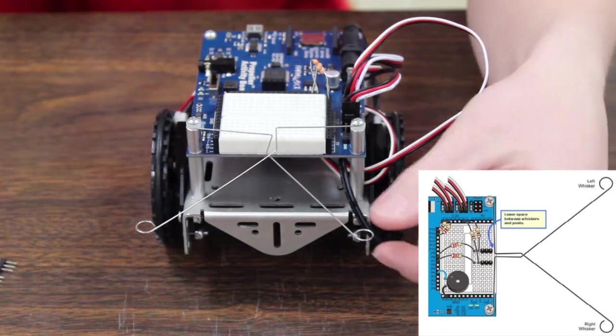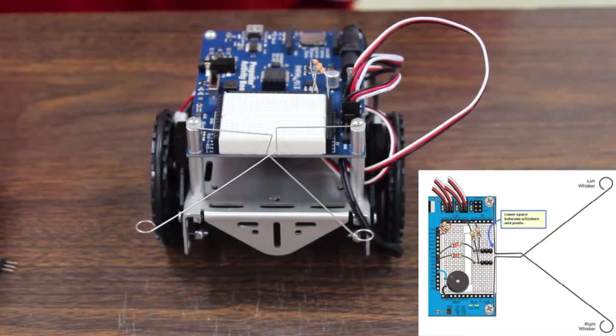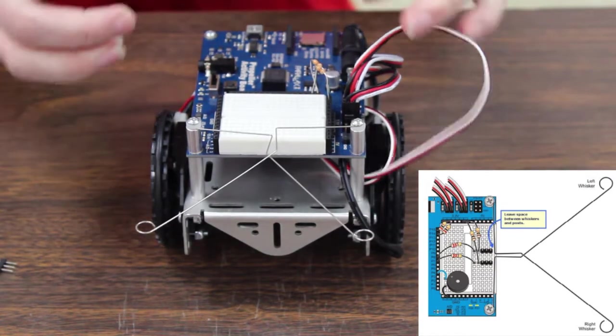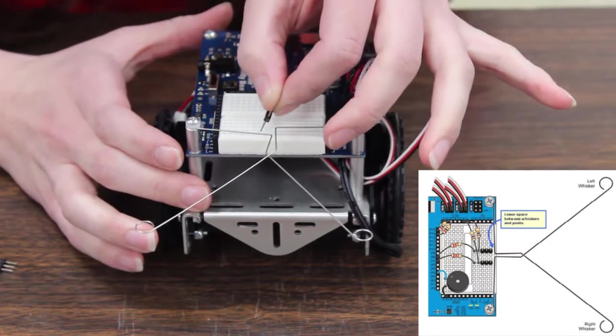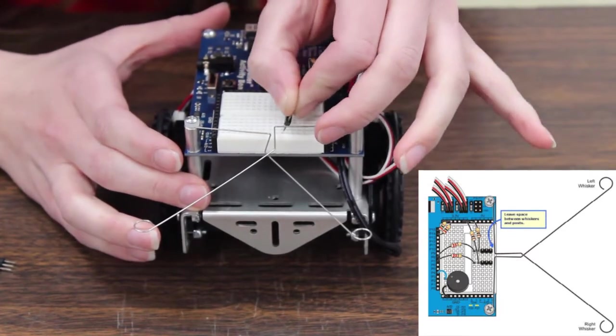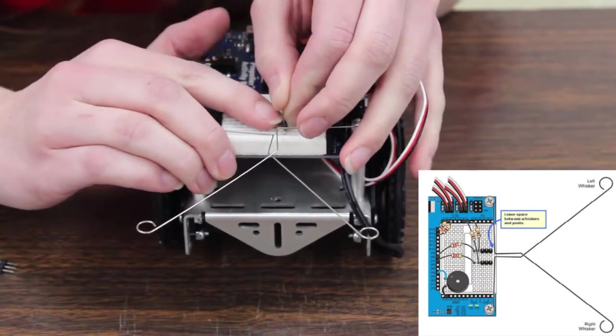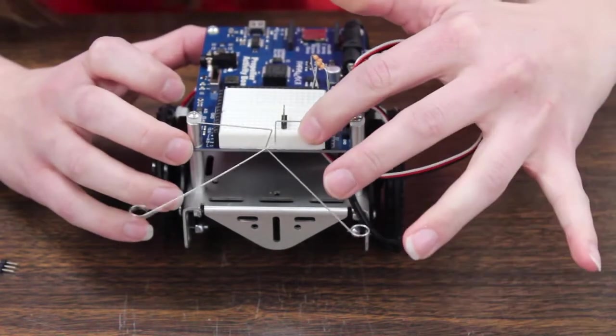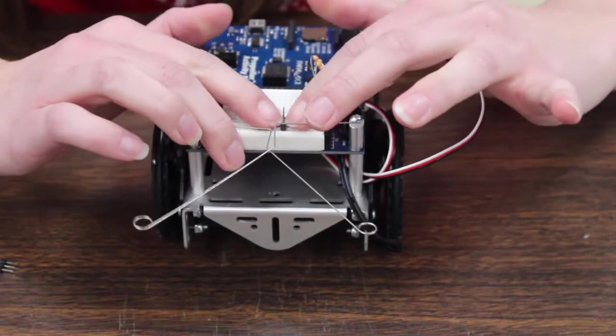All right, so after we've attached our whiskers, we're going to hook our three pin headers onto the breadboard. And it doesn't matter exactly what row they go in, as long as wherever you push them, they'll get hit by the whisker when the whisker is moved. So you can put both of those in there.